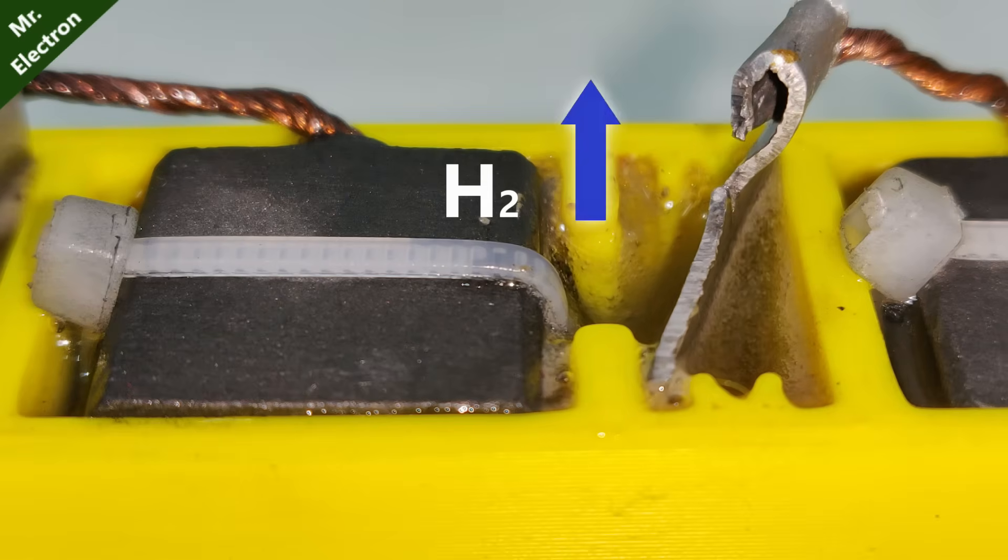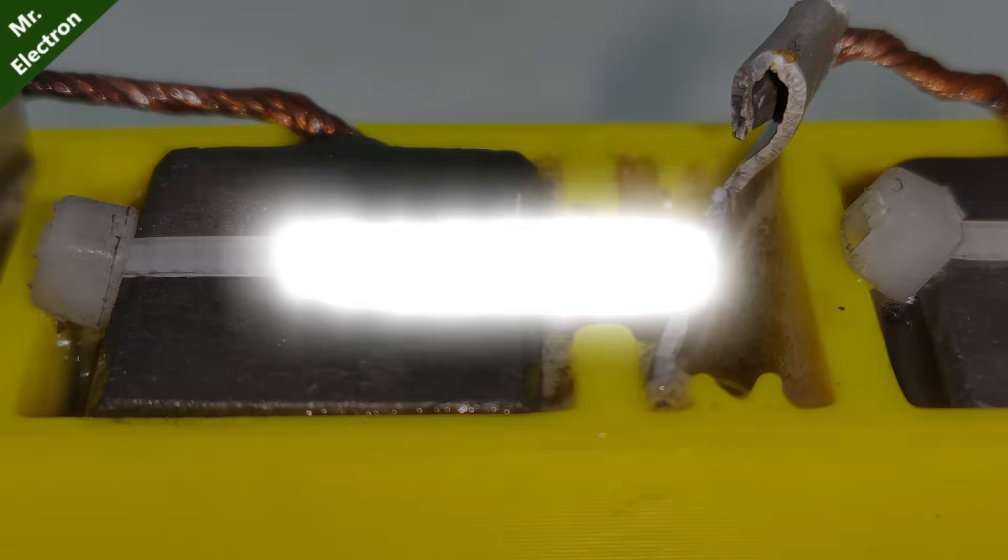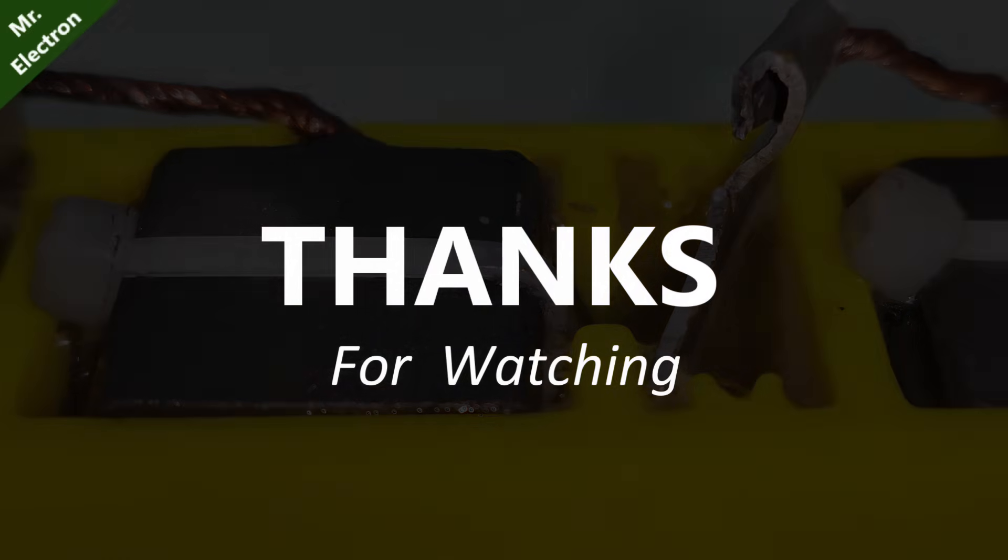So increasing the quantity of potassium hydroxide flakes in water is going to increase the flowing current. But there has to be a limit to which the current can increase. Obviously everything has a limit. So guys, that's all for today's video. See you in the next one. Stay connected. Bye bye.